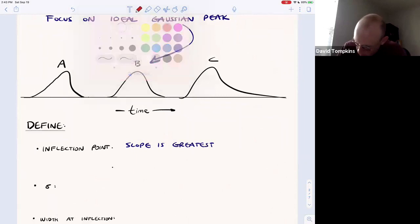So the inflection point of this peak is where the slope is the greatest. And that inflection point I'll show above in red, it's about right here.